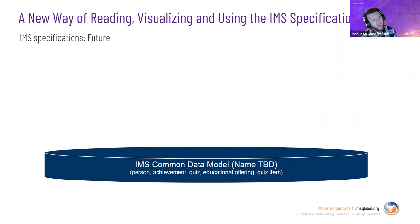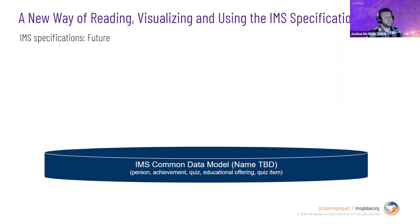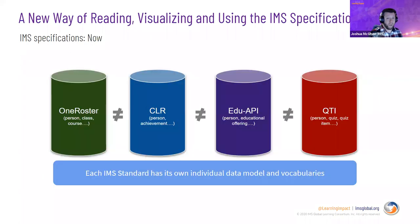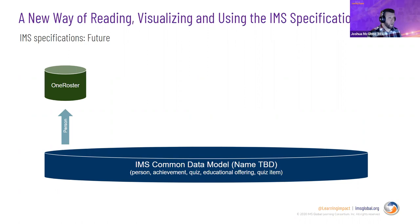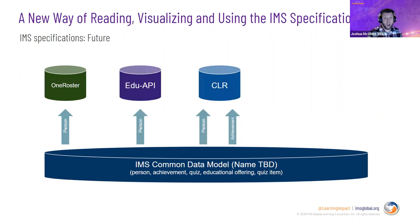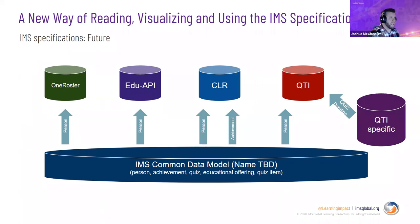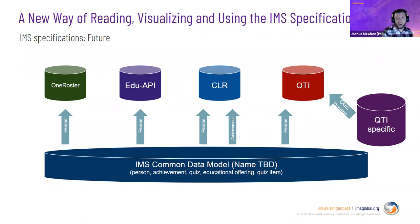So in the future, what we want to do — and we'll go into this much deeper — is introduce this idea called the Common Data Model. What that does is provide a commonly defined set of attributes that each of the specifications can use. That way, OneRoster has 'person', Edu API has 'person', CLR has 'person', QTI has 'person' — but they're all the same person. We understand that OneRoster and Edu API might have slightly different needs since one is K-12 and one is higher ed, but the basis is the same.